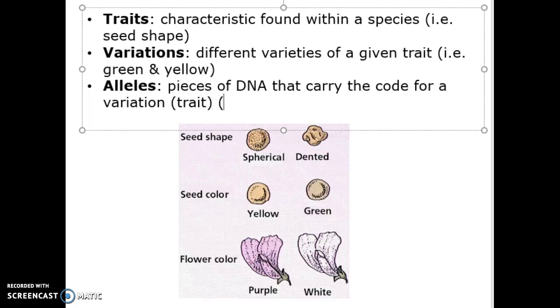Seed shape might be represented by big S, big S, maybe it's represented by big S, little s, or maybe it's represented by little s, little s. Those are all the pieces of DNA, the alleles, that represent the variation or we could say the trait. So it takes an allele from mom and an allele from dad, put them together, and now you have your variation of a given trait.